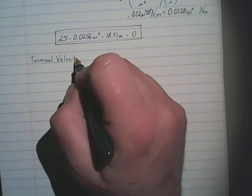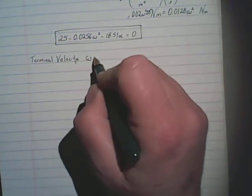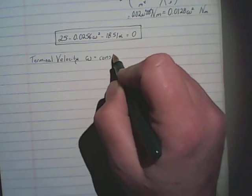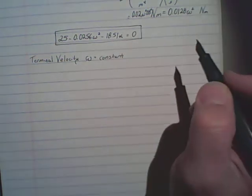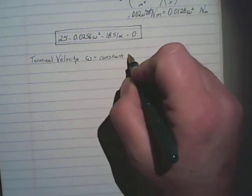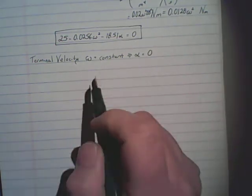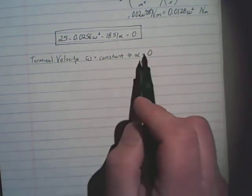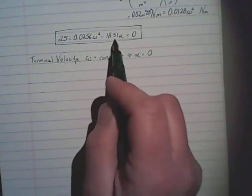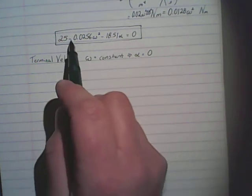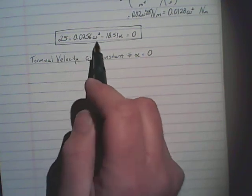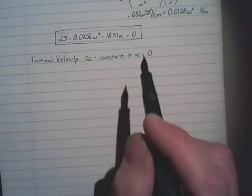The terminal velocity occurs when the omega is constant. And omega is constant, of course, when there is no angular acceleration. So, looking at the equation that we've got, if the angular acceleration is zero, the third term drops off entirely, and we just have 25 minus this expression with the angular speed is equal to zero.